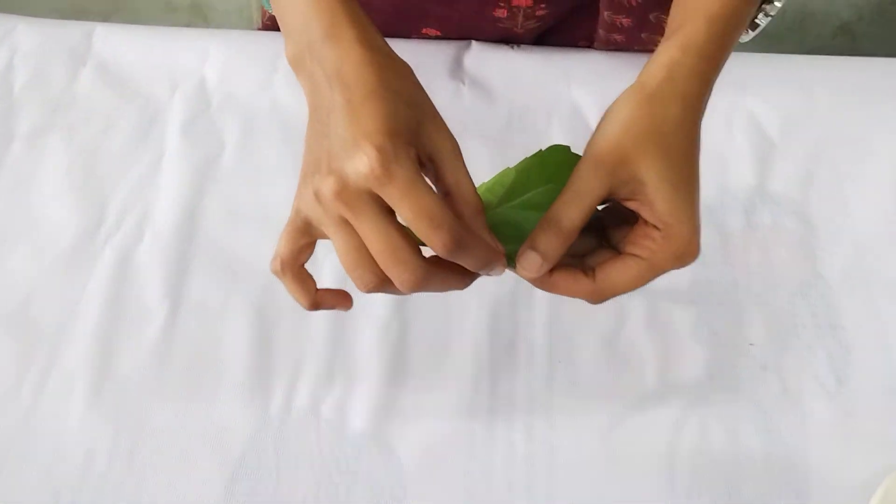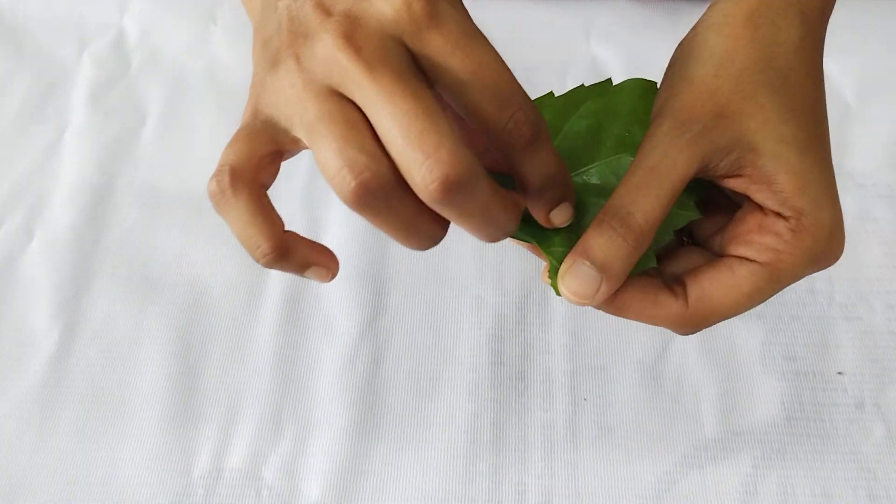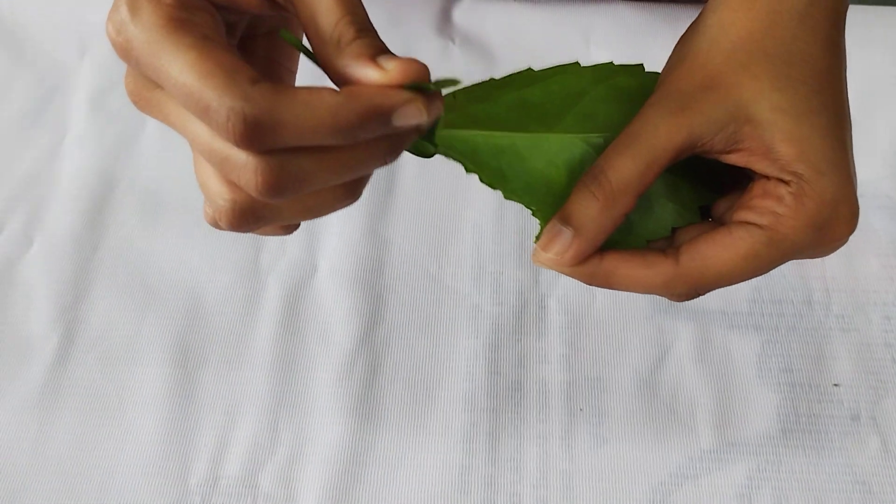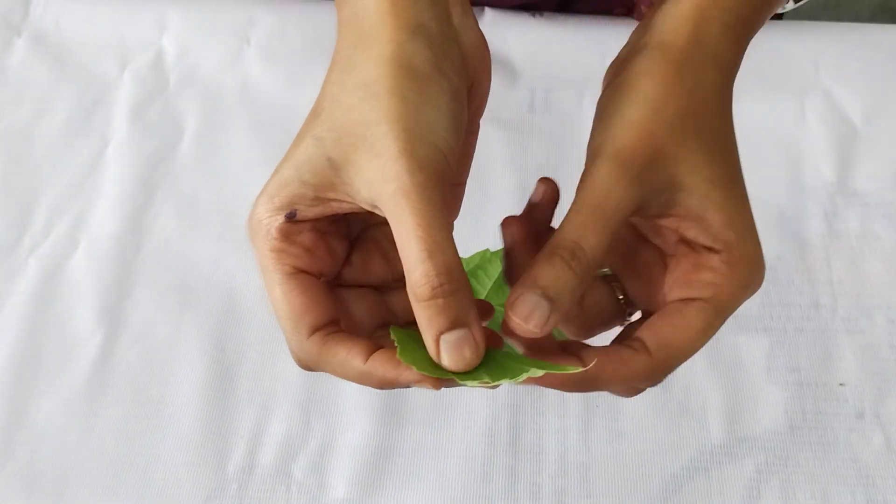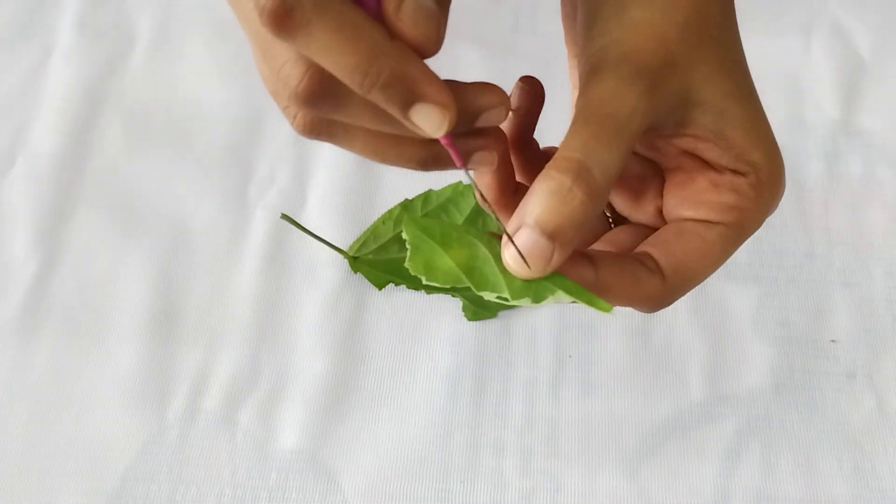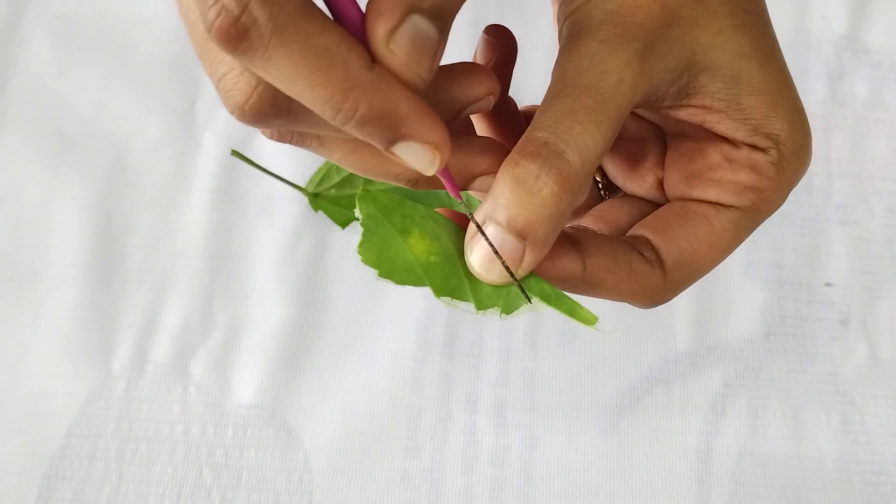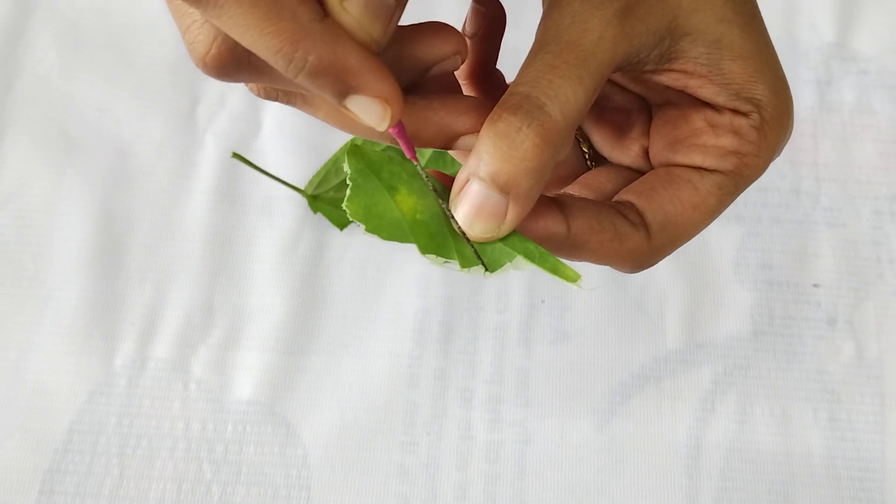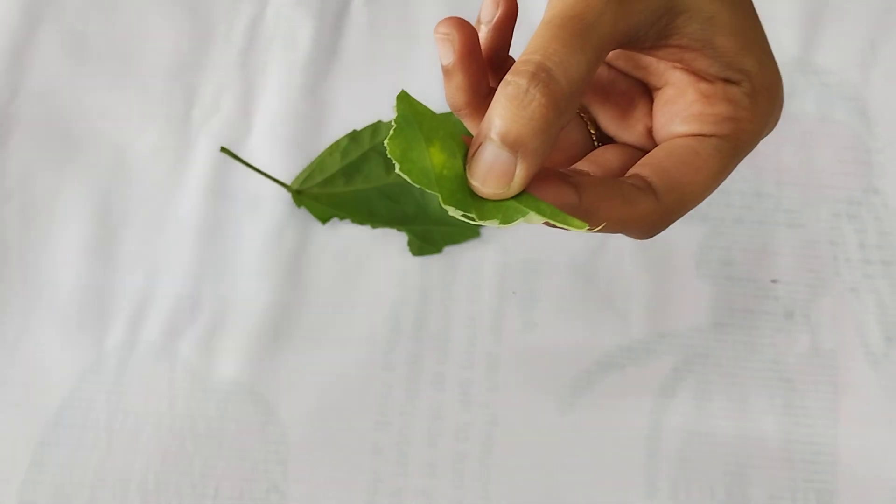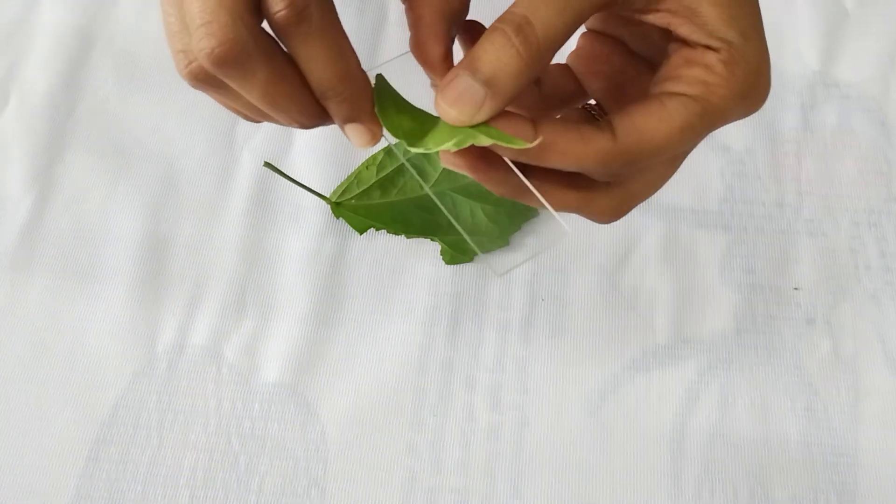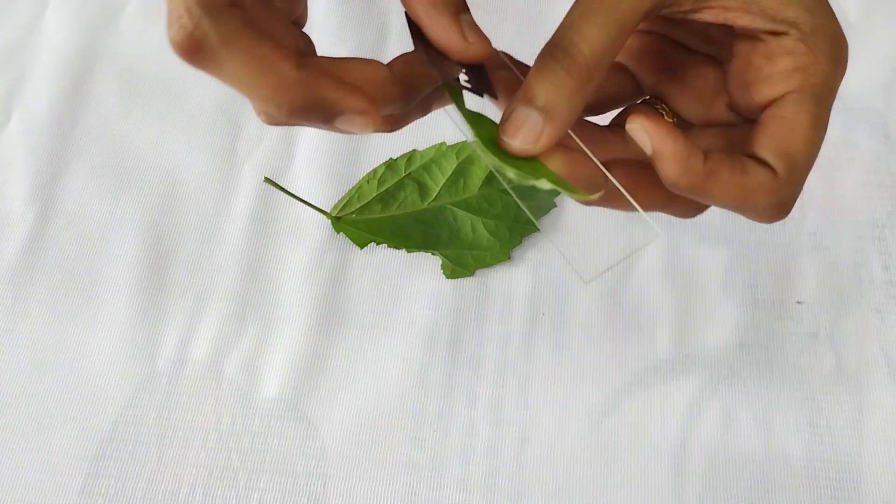First of all, we have to tear the leaf like this. Then we have to use this semi-transparent or white part, that is epidermis of this leaf, for this slide. Now we are going to cut this part.